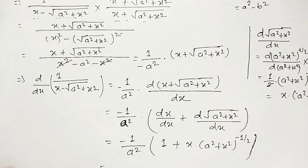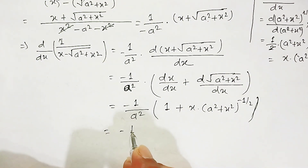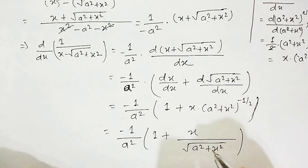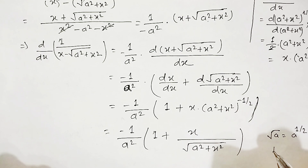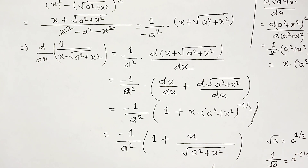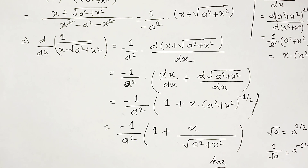The final answer is minus 1 over a² times (1 + x over √(a²+x²)), since (a²+x²)^(-1/2) is the same as 1 over √(a²+x²). I hope this video was helpful. Please share it with your friends, subscribe to the Civil Learning Online YouTube channel, and stay safe and take care.